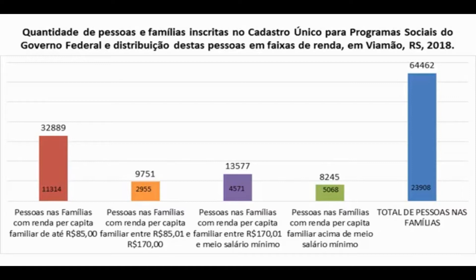Isso dá algo próximo de 3 pessoas por família, o que desmistifica um pouco a ideia de que a pobreza é um locus de geração de filhos. Já não é mais assim.